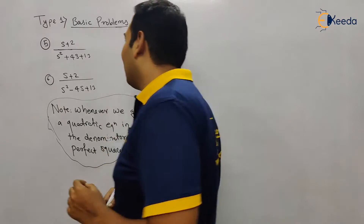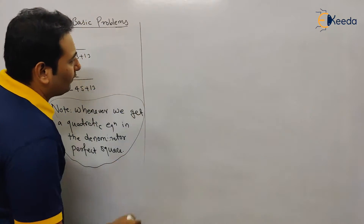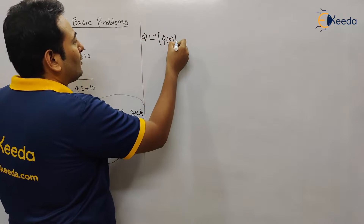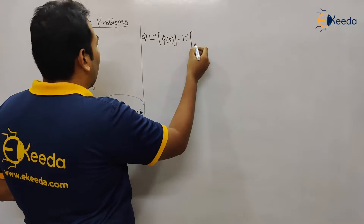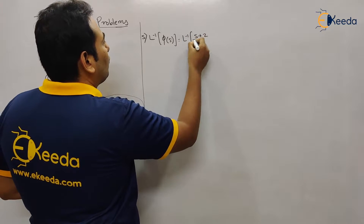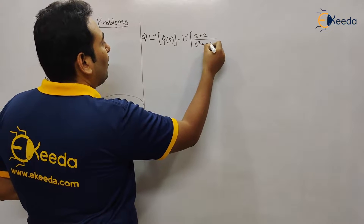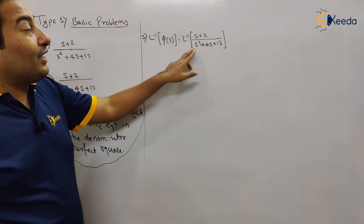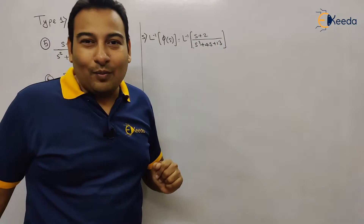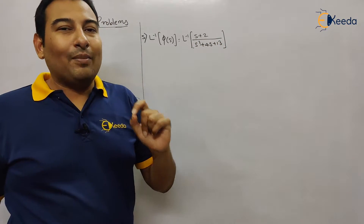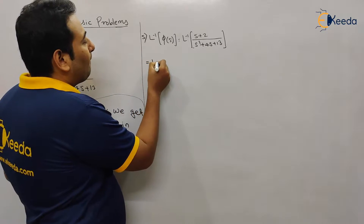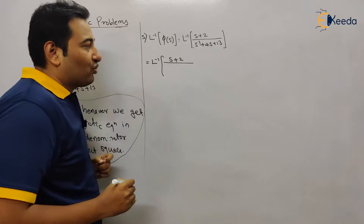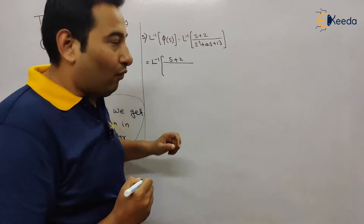Let us start with problem number five: Laplace inverse of F(s) is equal to Laplace inverse of (s+2) upon (s² + 4s + 13). We are getting a quadratic equation in the denominator, so what we're going to do is make it a perfect square. See the technique — how we are making it a perfect square.